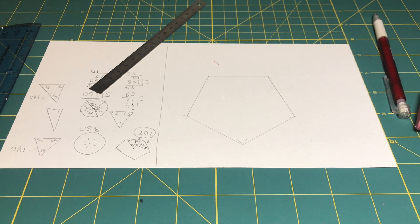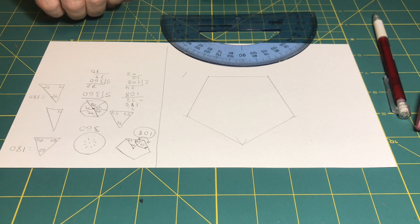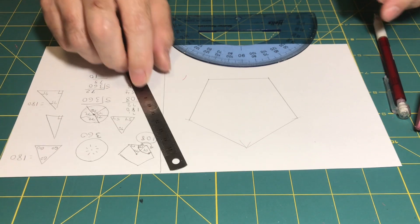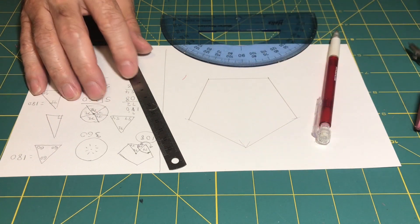One that was done using a protractor. There. A straight edge. Pencil. And a compass.